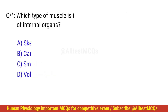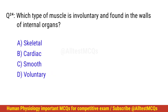Question number 24. Which type of muscle is involuntary and found in the walls of internal organs? The right option is C: Smooth.